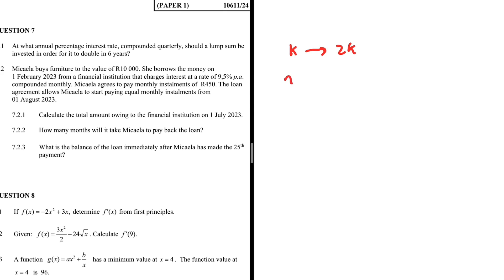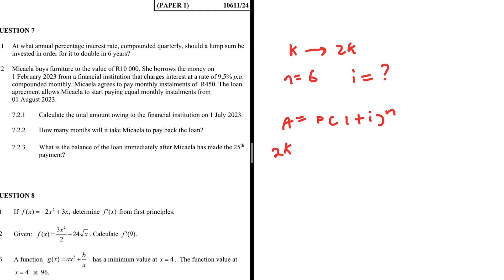So n is equal to six — that's the number of years. It is supposed to be compounded quarterly, so our interest is an unknown — that's what we are looking for. We know that when saving a lump sum, we have A equals P multiplied by (1 + i) to the power n. That's the compound interest formula.